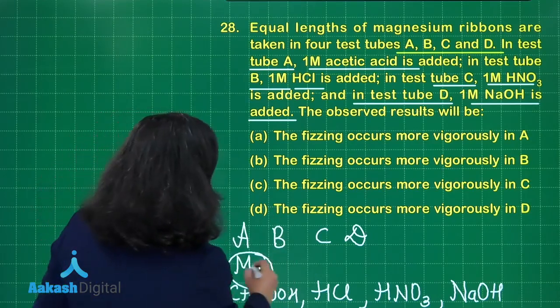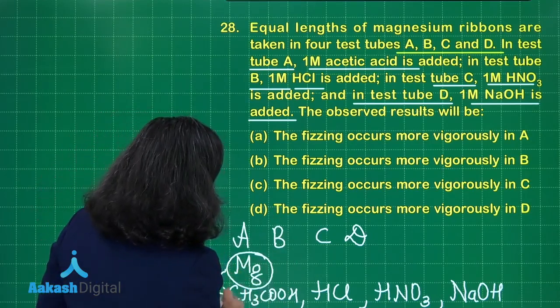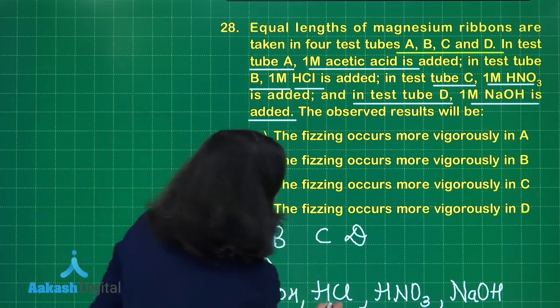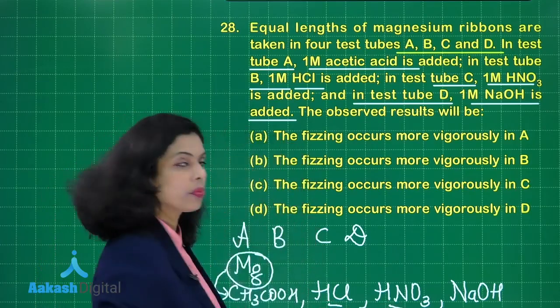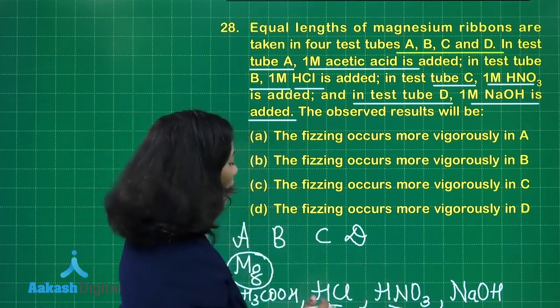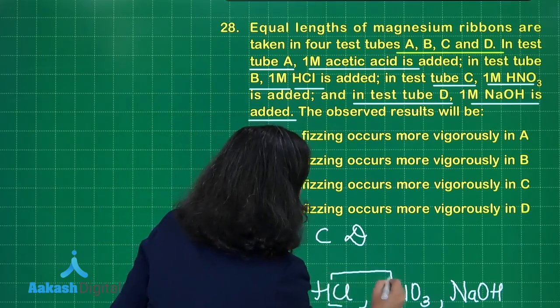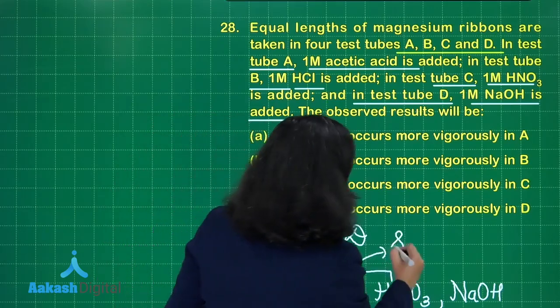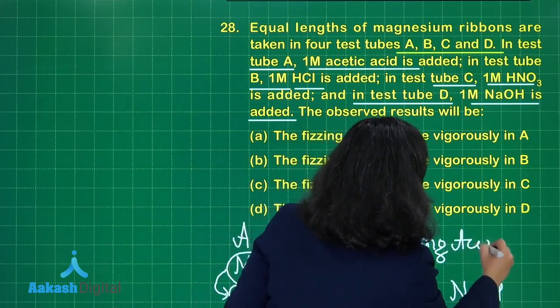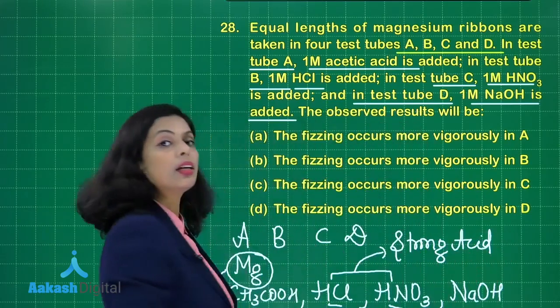Now here when magnesium is reacting with acetic acid, a weak acid, less fizzing would be there. But if magnesium is reacting with HCl or HNO3, more fizzing would be there, because HCl and HNO3 both are strong acids. So both of them are causing more fizzing.